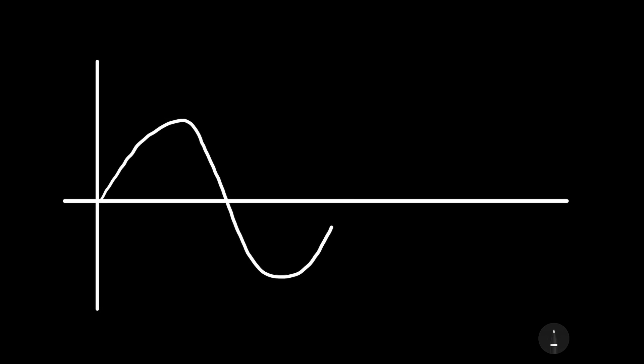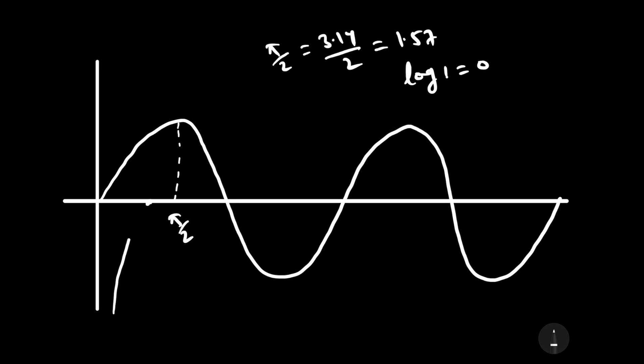Let us draw the graph of sin x and log x simultaneously. Then the graph will look something like this. We are drawing the graph of sin x till 4π. This point is π/2, and we know that π/2 equals 3.14 divided by 2, which equals 1.57. Log 1 equals 0, so 1 will be behind π/2, and the graph of log will pass from this point (1, 0).